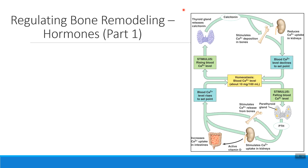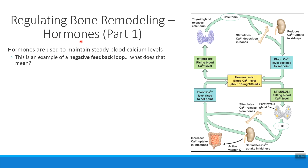One of the ways that your body regulates this process of remodeling your bones is by using hormones. When we talk about using hormones to regulate bone remodeling, it all comes down to your blood calcium levels. We're either going to break down bone tissue or build bone tissue depending on what's going on with the level of calcium in your blood. Using hormones to regulate blood calcium is an example of what we call a negative feedback loop.